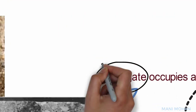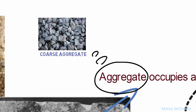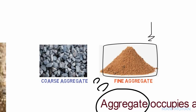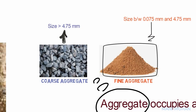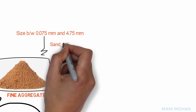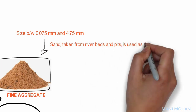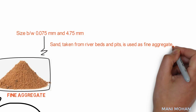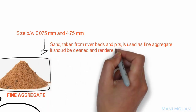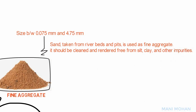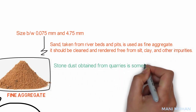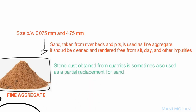Aggregates are divided into coarse aggregates or fine aggregates. As per Indian standard, aggregate particle size between 75 micron and 4.75 mm comes under the fine aggregate category, while size larger than 4.75 mm is coarse aggregate. Sand taken from riverbeds and pits is typically used as fine aggregate; before using it to make concrete, it should be cleaned and rendered free from silt, clay, and other impurities. Stone dust obtained from quarries is sometimes also used as a partial replacement for sand.